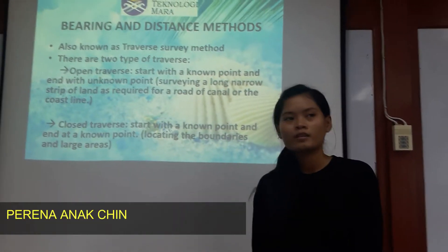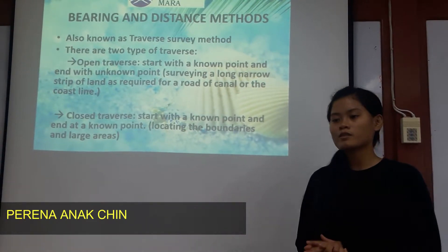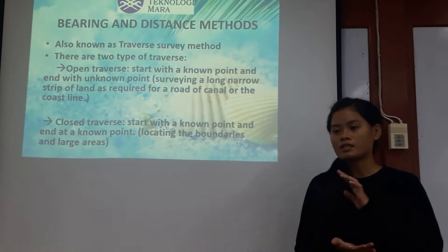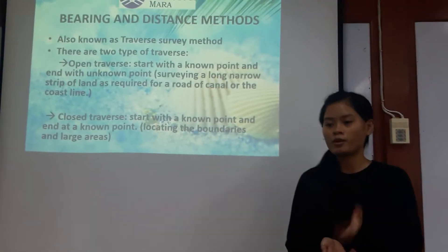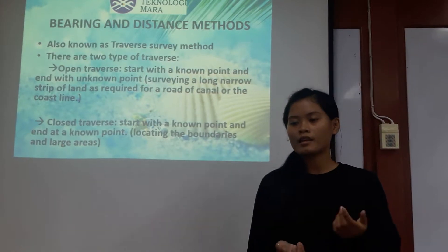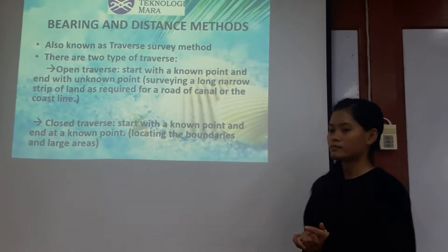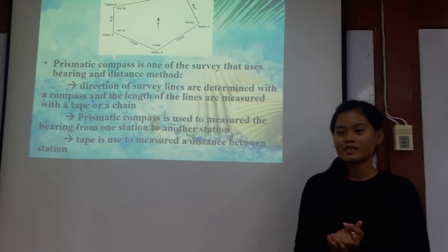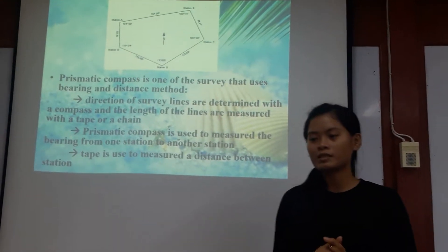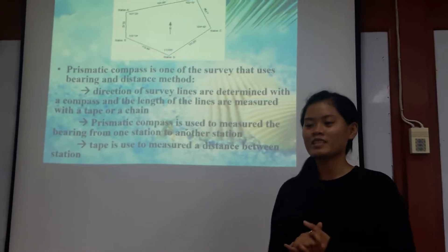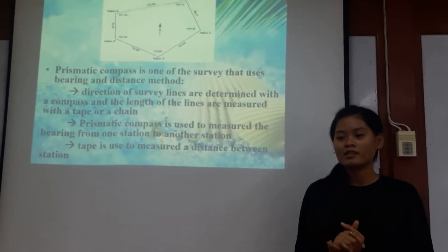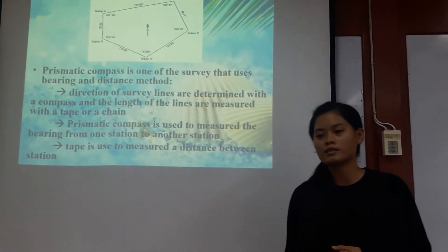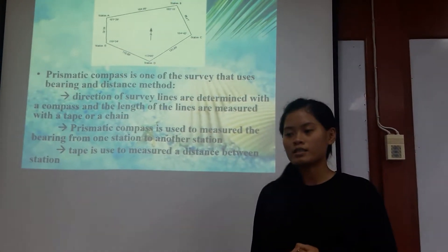The distance method is also known as the traverse surveying method. There are two types of traverse. The first is open traverse: open traverse starts with an unknown point and ends with an unknown point. The prismatic compass is one of the surveying instruments that uses the bearing and distance method. The direction of surveying lines are determined with a compass and the length of the line is measured with a tape or chain. The prismatic compass is used to measure the bearing from one station to another station, and the tape is used to measure the distance between stations.